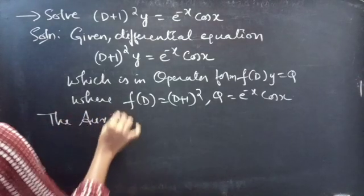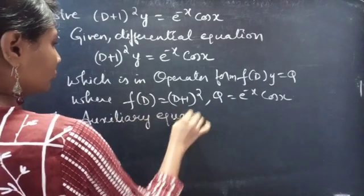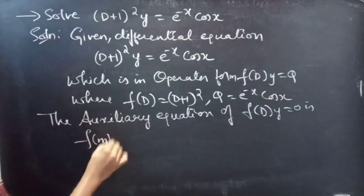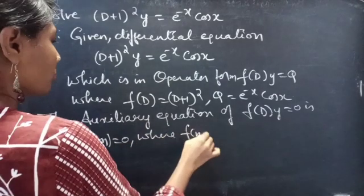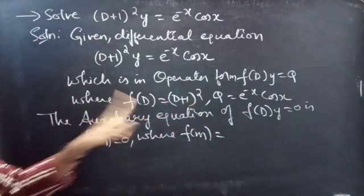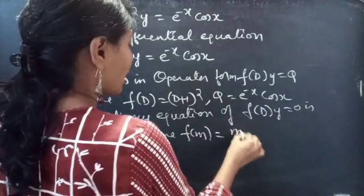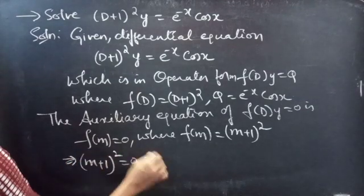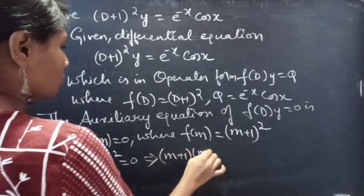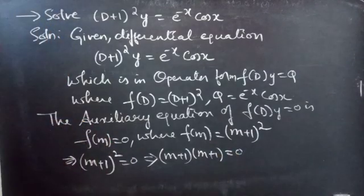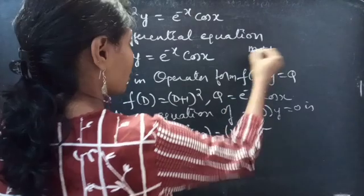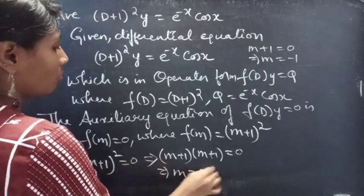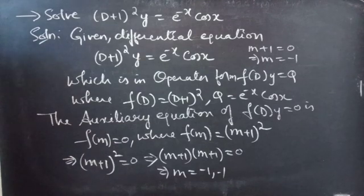The auxiliary equation of f(D)·y = 0 is f(m) = 0. Since f(D) = (D+1)², we replace D with m to get f(m) = (m+1)². The auxiliary equation becomes (m+1)² = 0, which factors as (m+1)(m+1) = 0. Since m+1 repeats twice, we get m = −1, −1 — equal roots.